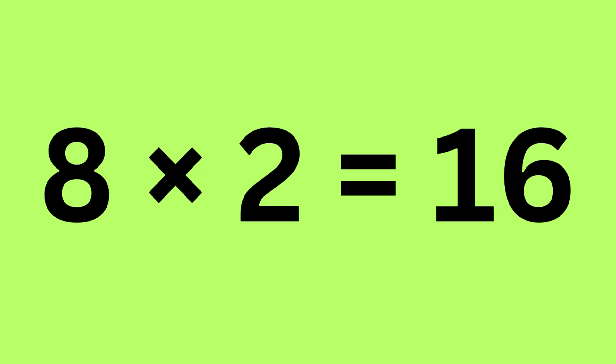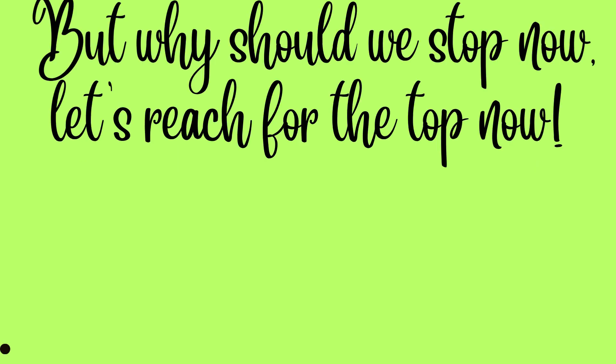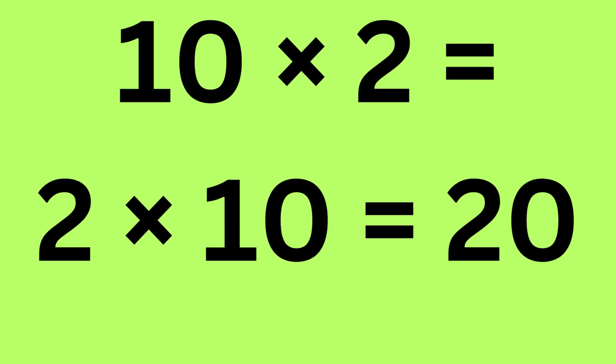8 times 2 is 16, 9 times 2 is 18. But why should we stop now? Let's reach the top now — 10 times 2, or 2 tens, is 20.